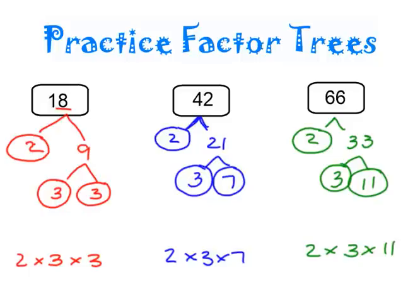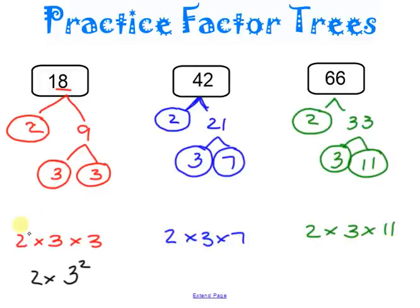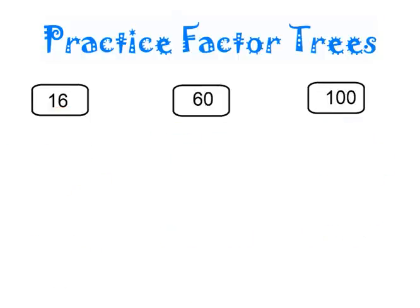I also want you to learn how to write these with exponents. Another way to write 3 times 3 is 3 to the second power. It's the same thing, but it's good practice to write it that way. Also notice that I'm writing the numbers in order from least to greatest: 2, 3, 7 — 2, 3, 11 — 2, 3, 3. That's proper format for prime factorization.